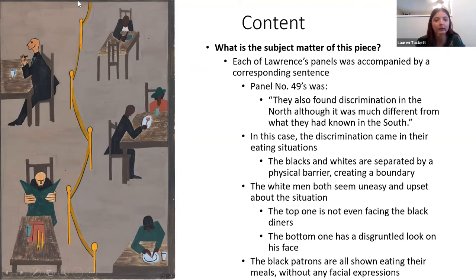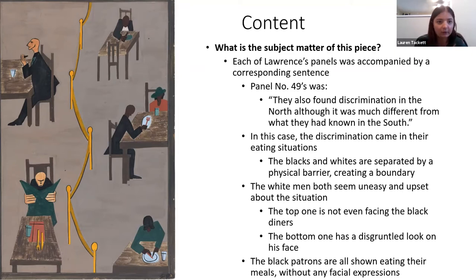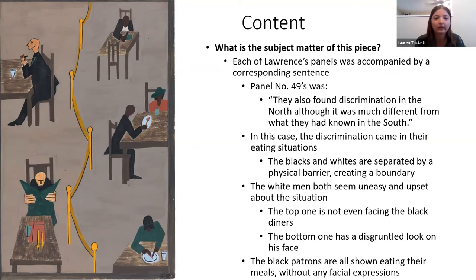There is the physical boundary separating the two sides. Lawrence also made it so the white men on the left had more facial expressions — the one on the bottom looks physically agitated and disgruntled, upset about his eating situation. But Lawrence didn't give any faces to the Black patrons on the right — most were looking down, just eating their meals. He intentionally withheld expressions to show the contrast in attitudes: the white patrons were upset, while the Black patrons were simply trying to eat and get a meal.